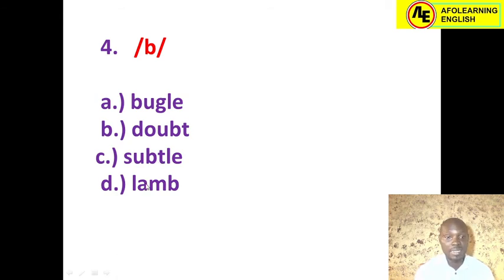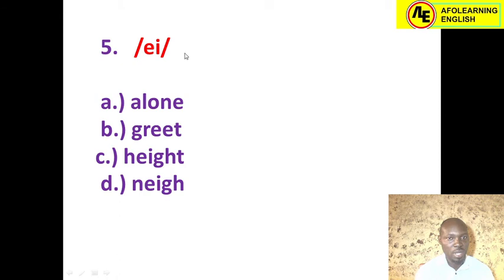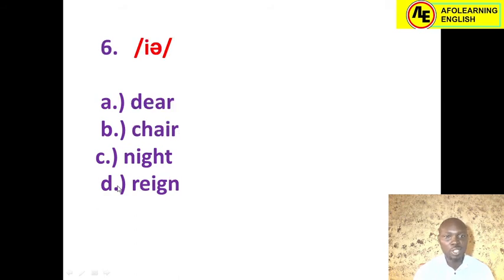In 'lamb,' B is equally silent. So the correct answer for number four is 'bugle.' Number five: the diphthong /eɪ/ — the /e/ sound glides into /ɪ/, these are called the /ɪ/-ending diphthongs. Option A 'alone' — no. 'Greed' — no. 'Height' — no, that's /aɪ/, not /eɪ/. Option D 'name' — yes, correct answer. The correct answer is option D: name.